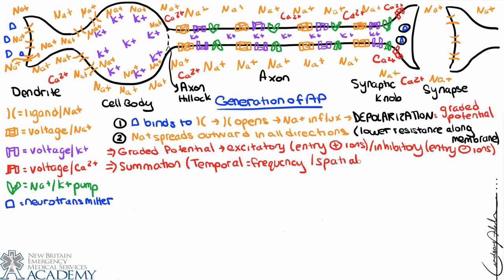The other way to have summation is spatial, which means that instead of opening only one ion channel, we open multiple ion channels at the same time. We see three ion channels at the dendrite — instead of opening just one, we could open all three simultaneously. In a similar fashion, we get an abundance of sodium ions into the cell, which really means we have a good chance of raising that membrane potential quite a bit. Typically one graded potential won't cover it, but with summation — multiple channels open and or opened frequently — we can usually get enough positive ions into the cell to work towards generating an action potential.